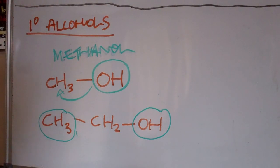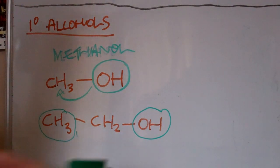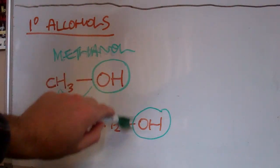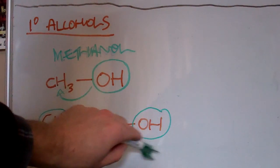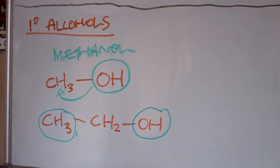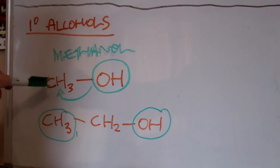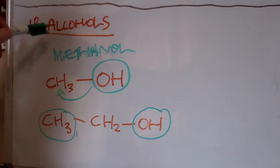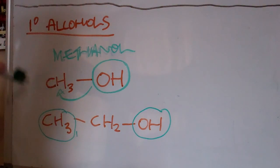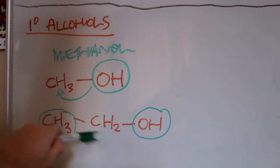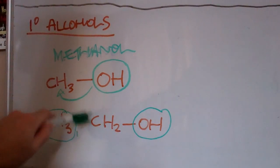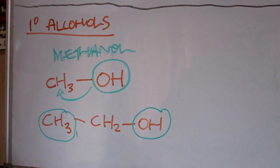So primary alcohols are dependent on where the hydroxyl group is positioned — either it's positioned and bonded to a carbon that has no methyl groups, or it's bonded to a carbon, like this one here, that's got one methyl group attached to it. That's primary alcohols — pretty straightforward.